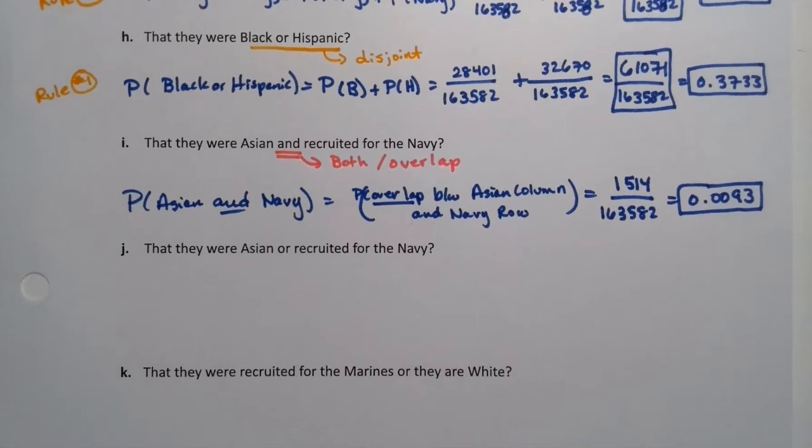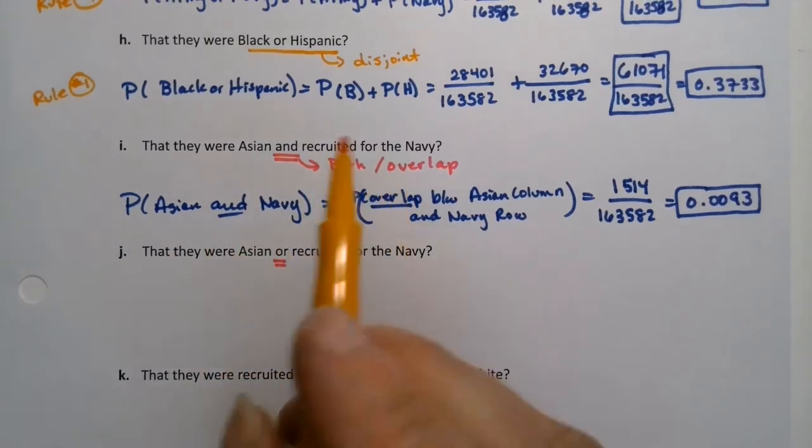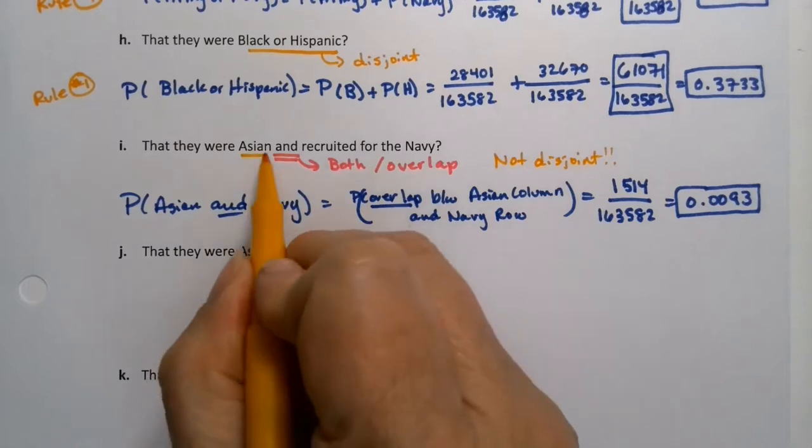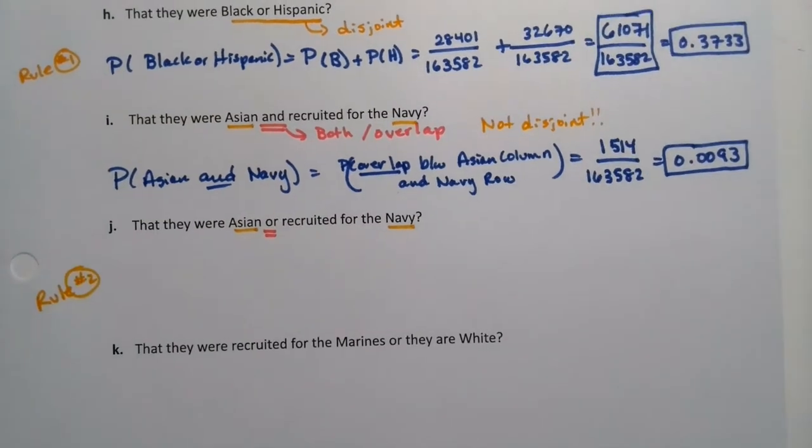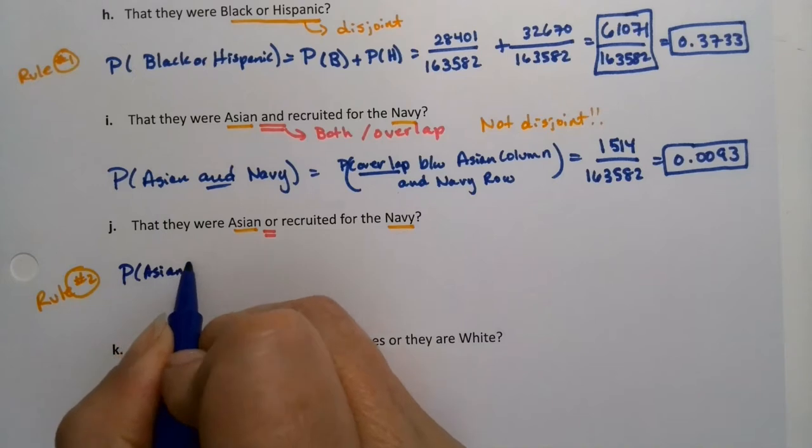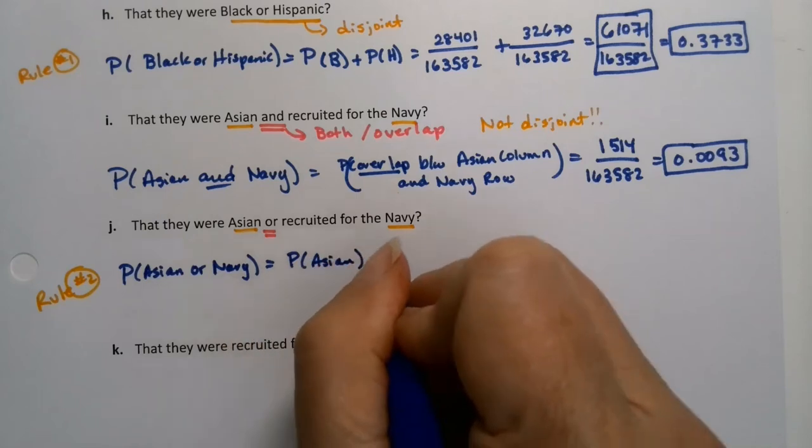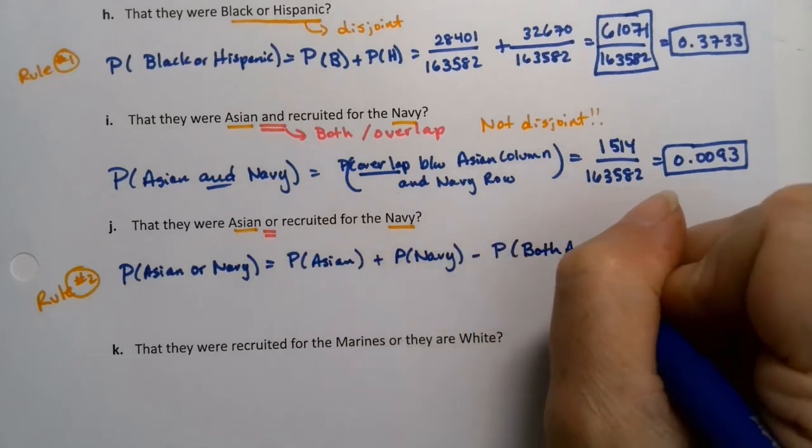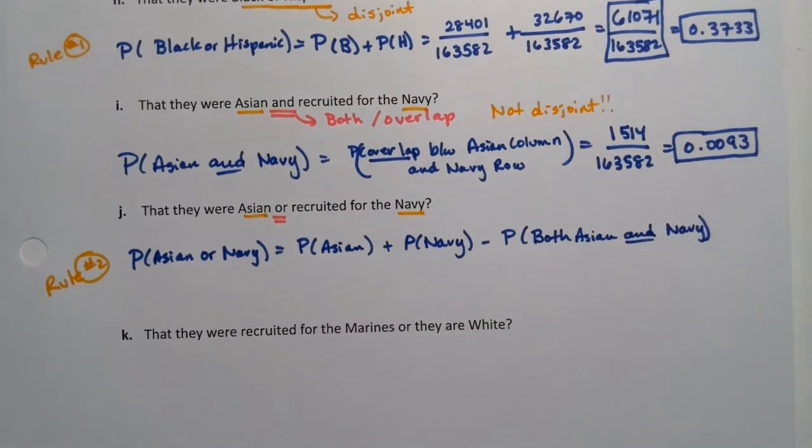All right. Now, what's the probability that they were Asian or recruited for the Navy? Oh, or. So that means we're going to use - now notice they have an overlap, so they're not disjoint. And that affects us down here, right? Because Asian and Navy are not disjoint. So therefore, I'm going to have to use rule number two. So when they're not disjoint, you take the probability of Asian plus the probability of Navy. So you add them up, but you minus the probability of Asian and Navy, which is the overlap.